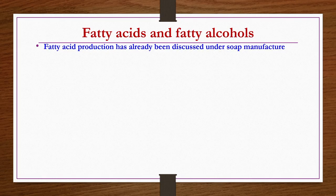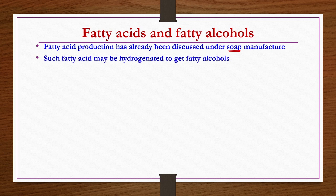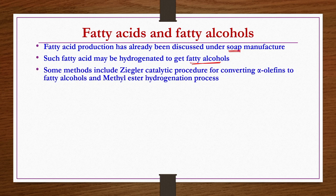Now we talk about fatty acids and fatty alcohols as common raw materials. Fatty acid production has already been discussed under soap manufacturing, where triglycerides are reacted with hot water at high pressure to produce fatty acids and glycerin, and further purification separates the products. Such fatty acids may be hydrogenated to get fatty alcohols by a simple catalytic hydrogenation reaction. However, two more processes are discussed here: the Ziegler catalytic procedure for converting alpha olefins to fatty alcohols, and the methyl ester hydrogenation process.